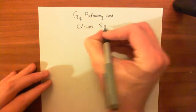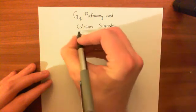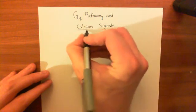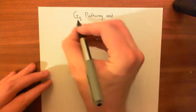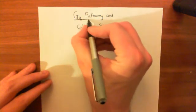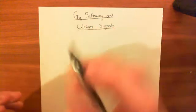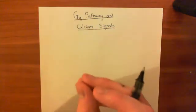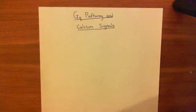There are three different types of calcium signal that the GQ pathway can give rise to, and these are blips, puffs, and waves. They are in order of increasing severity — blips, puffs, and waves.